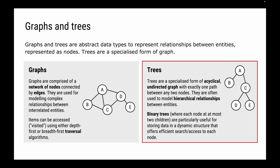Binary trees are a particular form of tree where each node has at most two children. It could have no children, it could have one child, it can have two — it can't have any other options. Binary trees are particularly useful for storing data using a dynamic structure that can grow as needed, while offering very efficient search and access to each node.